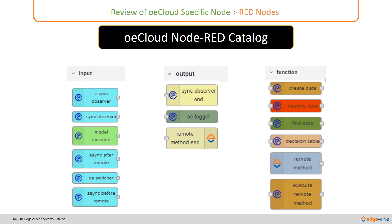This is the whole catalog of node-red nodes created by the OECloud team in order to facilitate event-driven programming. In the subsequent videos, we will take a look at the demonstration of some of these popular OECloud node-red nodes and learn how to do event-driven programming with this.